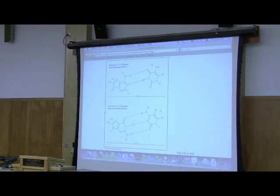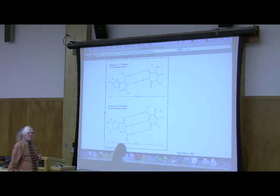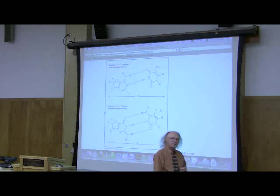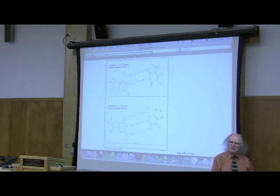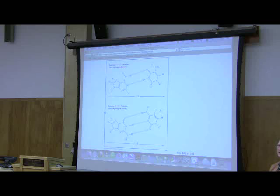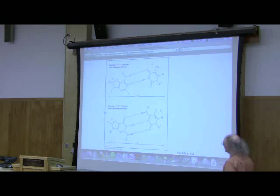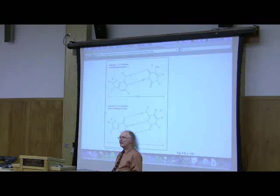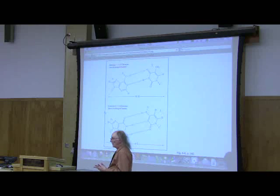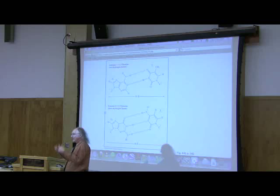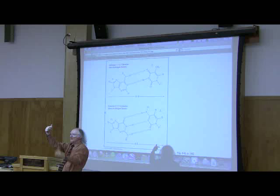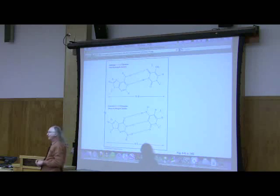There's the base pairing. The base pairing, A pairs with T. The thing that holds the base pairs together are hydrogen bonds. You know from what I've told you so far that hydrogen bonds are relatively weak forces. The things that hold the nucleotides together within a strand are phosphodiester bonds. So between bases on two strands, we've got hydrogen bonds. Between nucleotides on the same strand, we have phosphodiester bonds.